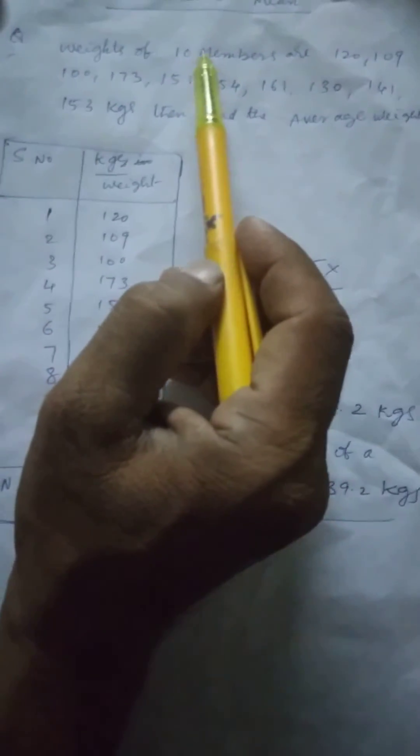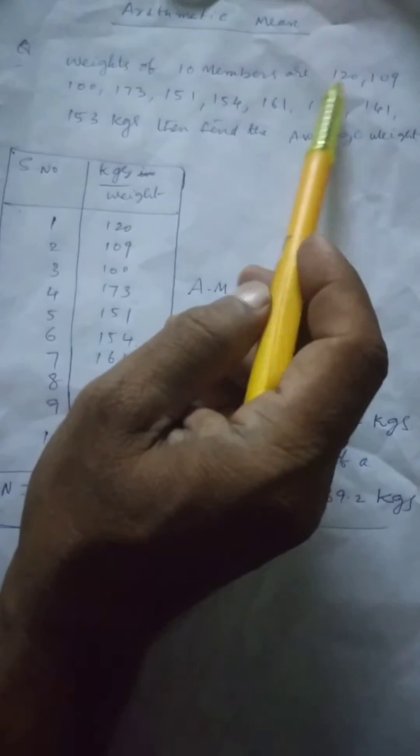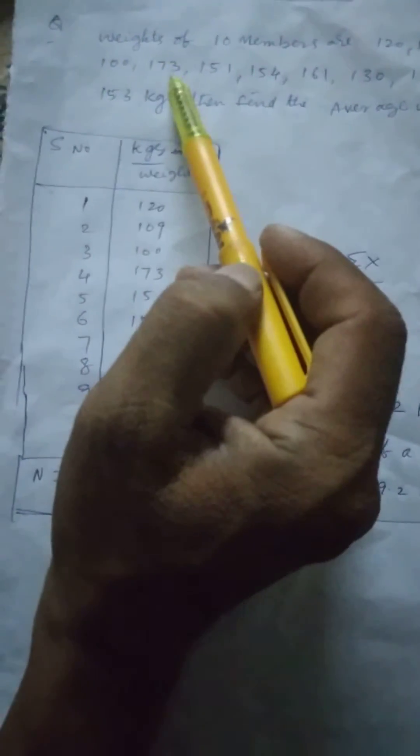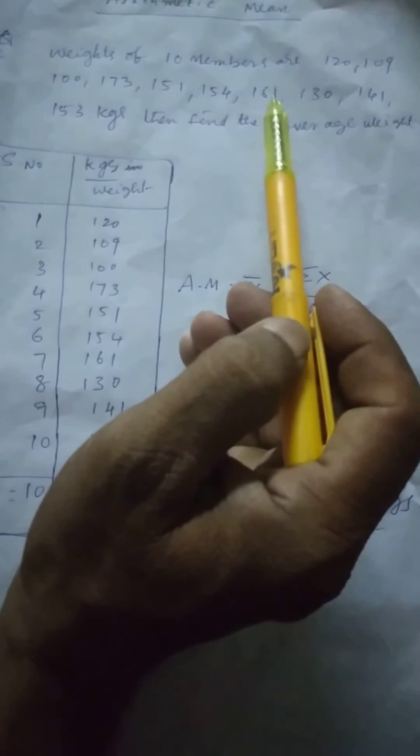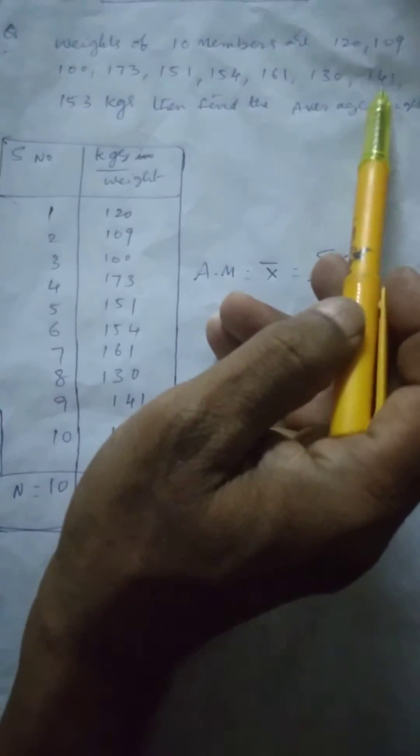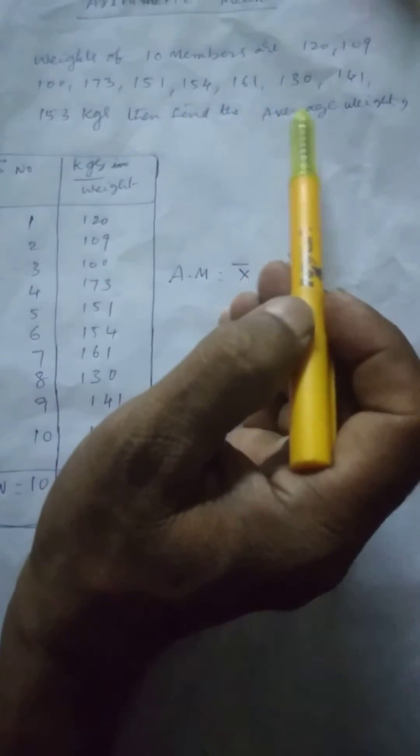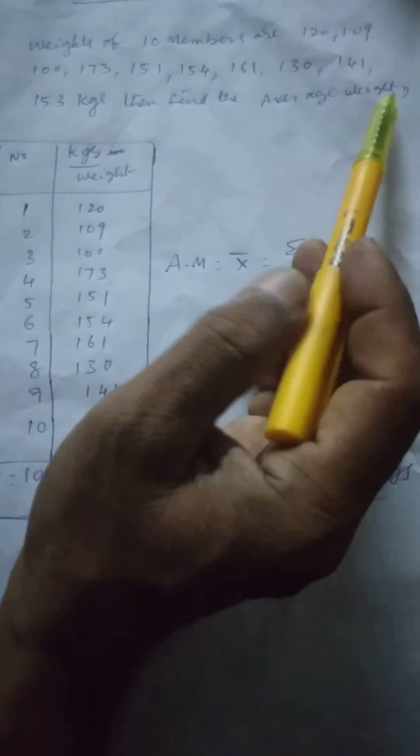The weight of 10 members are 120, 109, 100, 173, 151, 154, 161, 130, 141, and 153 kg. Then find the average weight for a man.